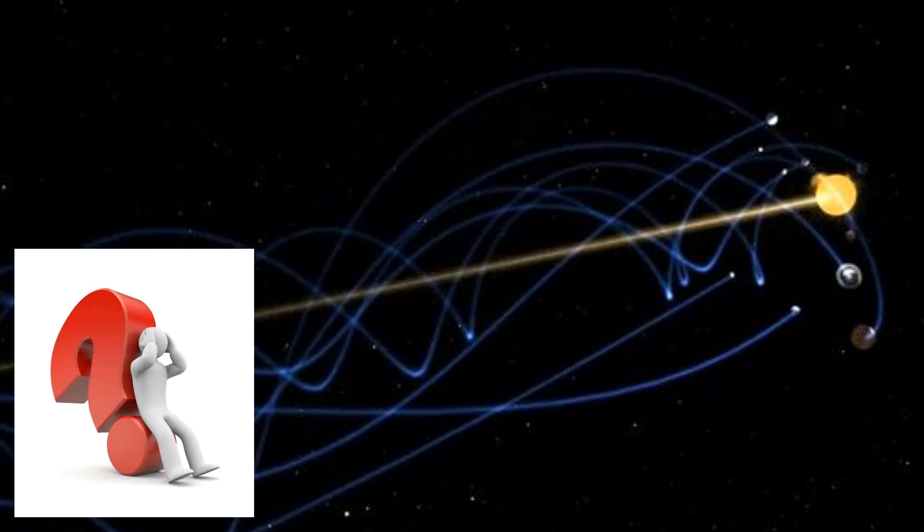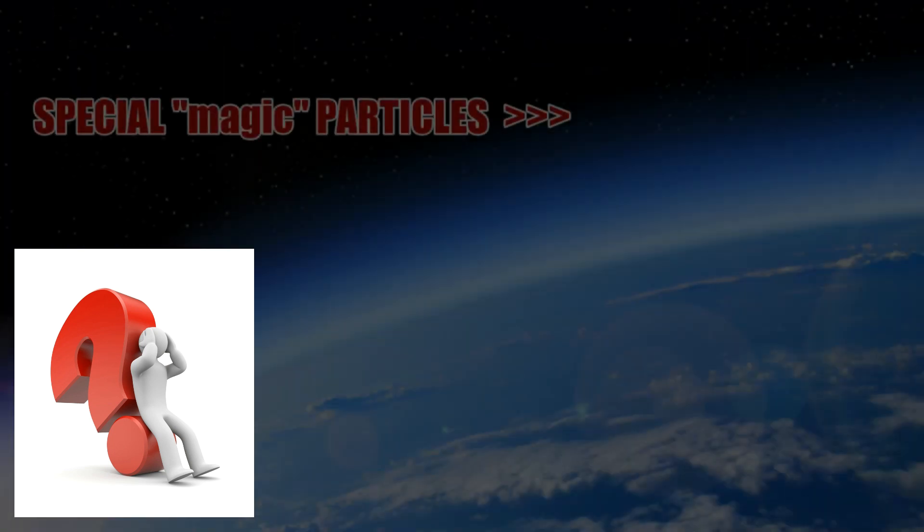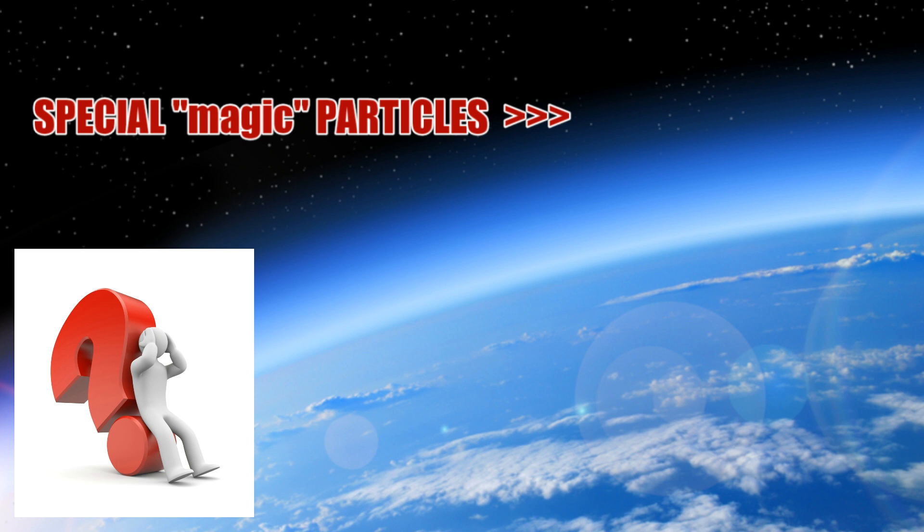Is this field of decreasingly pressurized particles dispersed evenly outward in all directions? Does this field stay statically attached to the spinning globe despite the crazy arc speeds those most distant and decreasingly dense particles would need to maintain? I thought gravity was supposed to pull matter towards planets, not push it away.